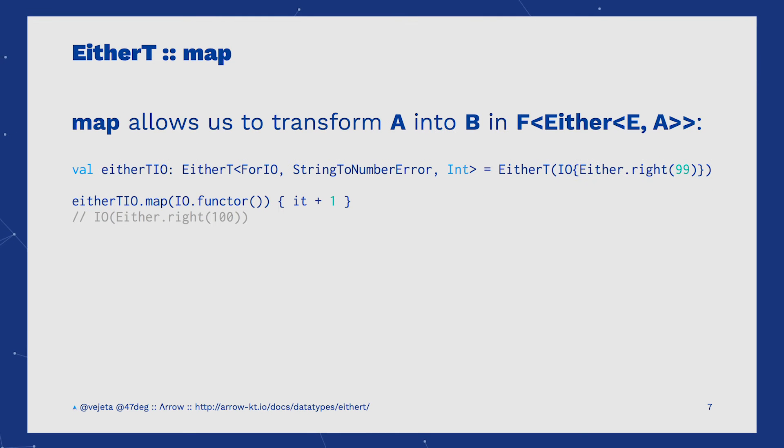Another advantage of EtherT is that we can operate over the right values with map. In this example, we can see an EtherT defined, and how to provide a transformation for the right value. With the result of this, and since this Either was a right case, the transformation will be 99 plus 1, hence 100.